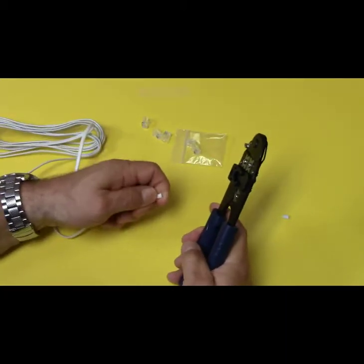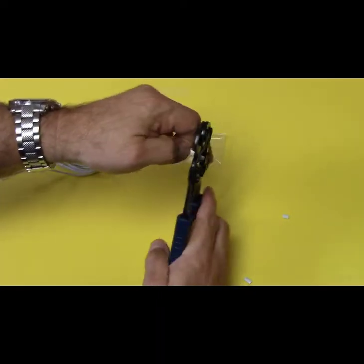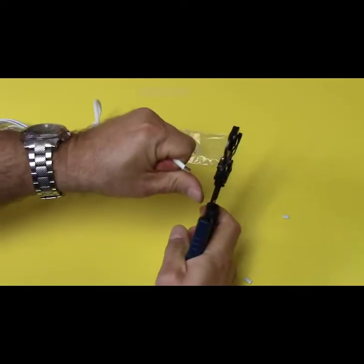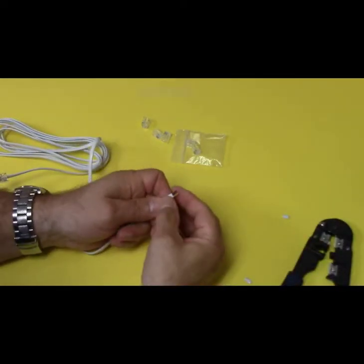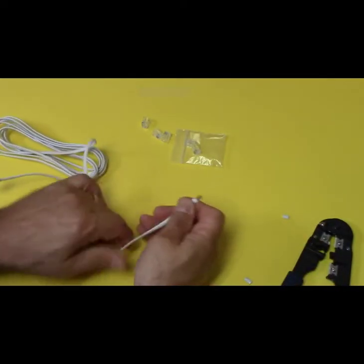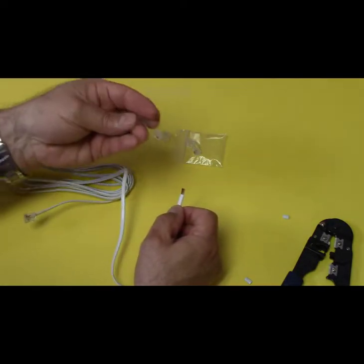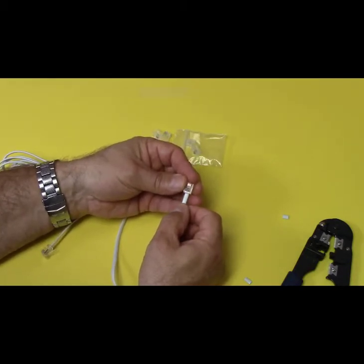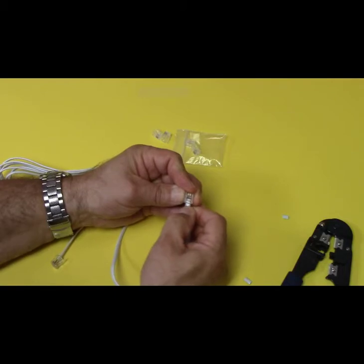And my next step is to strip it. So I'm going to push it in here at the stripper, push it right up against the stop, squeeze, and pull the wire away. I've got my four wires. I've got black on the left. I've got my RJ11. I'm going to slide the wires into the RJ11, wiggle it, and make sure it's all the way to the end.